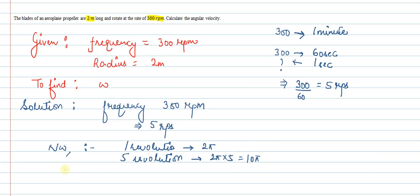In five rps, omega will be equal to 10 pi radian per second. Now if I keep the value of pi, I will get the answer as omega equal to 10 into 3.14 which is equals to 31.4 approximately radian per second. So this is our answer. Thank you.